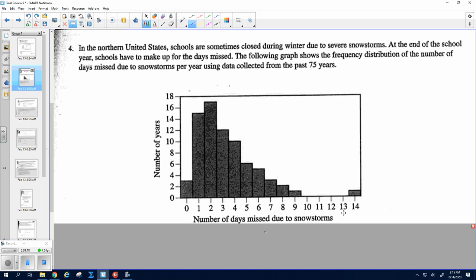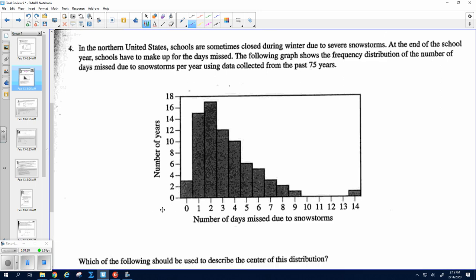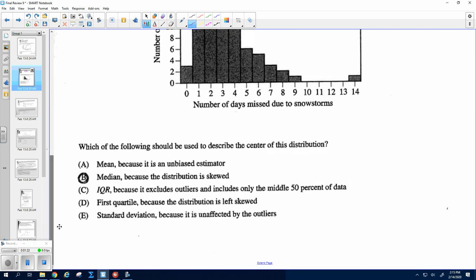Okay, number four. Anytime you have skewed data, the best measure of center is the median. So be sure you do B on this one. Remember that means are pulled up towards the tail. So that outlier at 14 will pull the mean up, so it's not an unbiased estimator. And then IQR, quartiles, or just standard deviation are not measures of center. Neither is the first quartile.